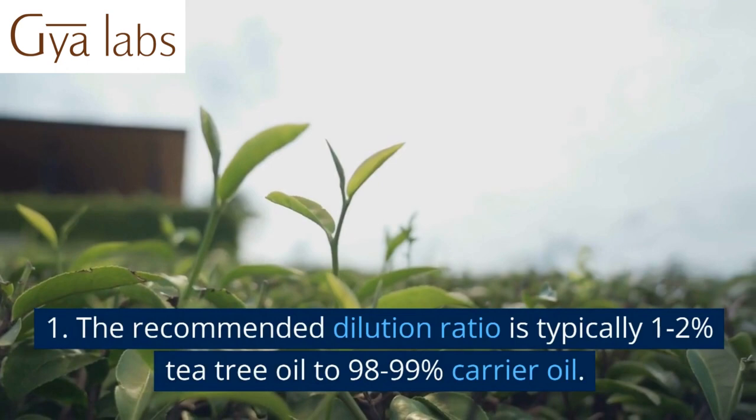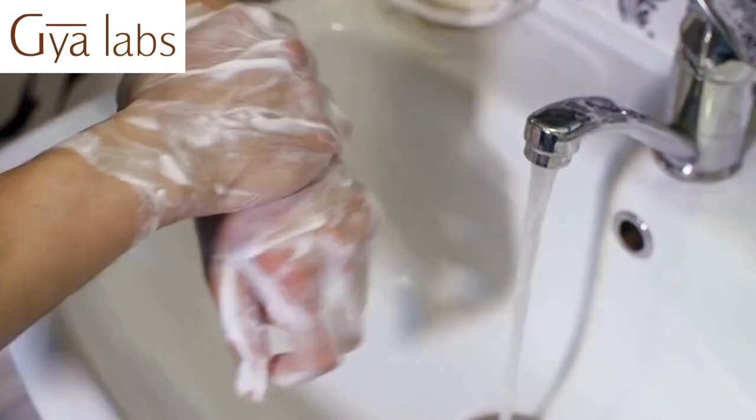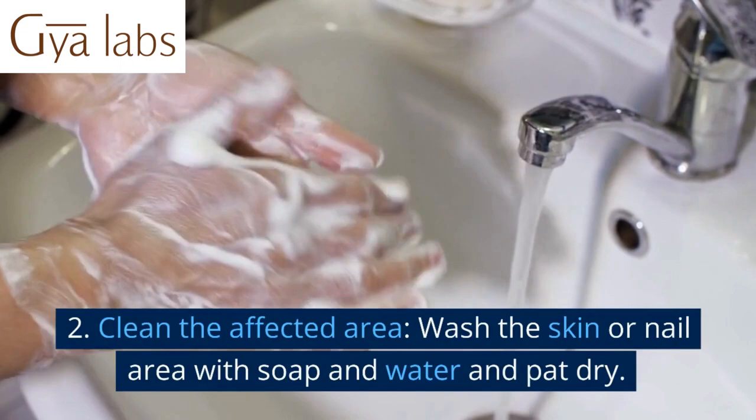The recommended dilution ratio is typically 1 to 2% tea tree oil to 98 to 99% carrier oil. Step 2: Clean the affected area — wash the skin or nail area with soap and water and pat dry.